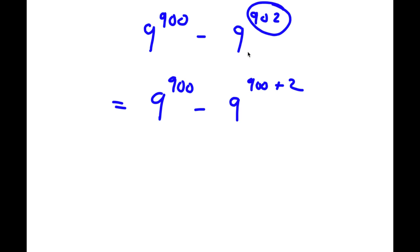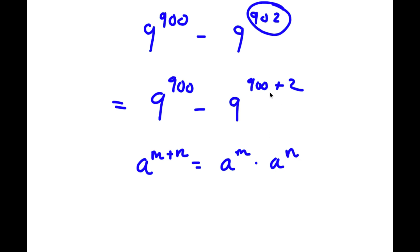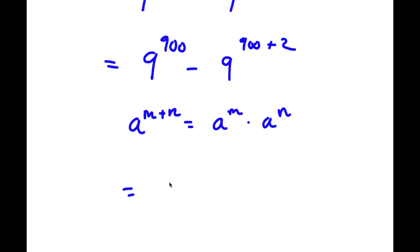If I have something in the form a to the power of m plus n, this is equal to a to the power of m times a to the power of n. So in this case, 9 to the power of 900 plus 2 is going to equal 9 to the power of 900 times 9 to the power of 2.